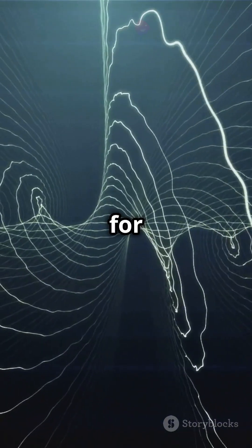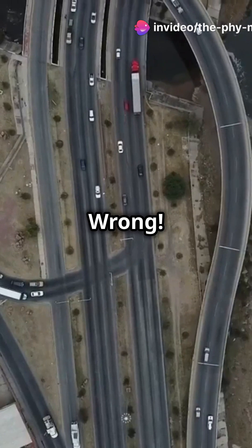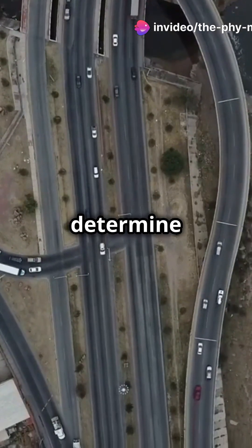So, you might think D is just like E but for free charges, right? Wrong! Divergence alone can't determine a vector field. You need to know the curl, too.